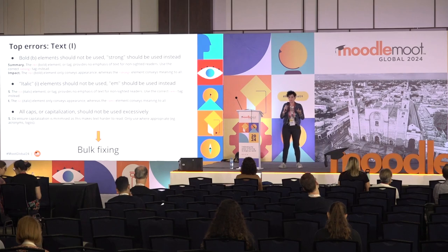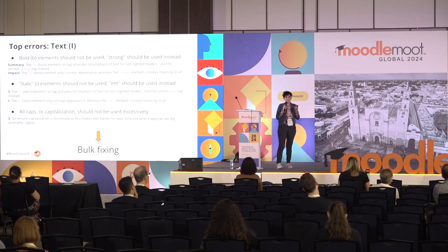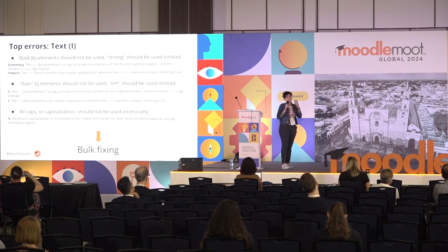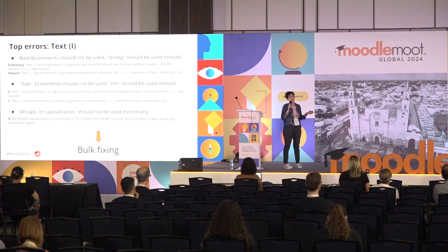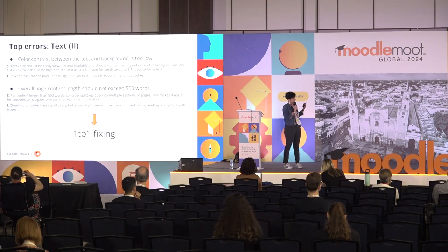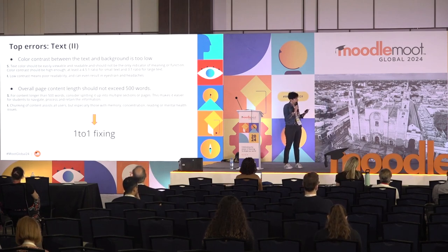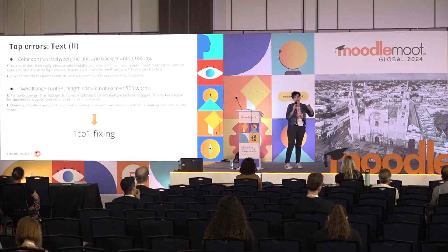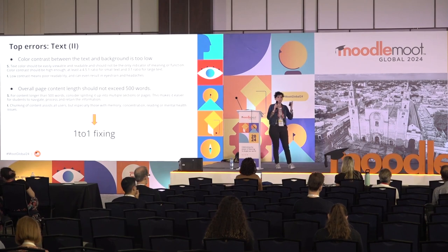The most common errors are due to improper use of HTML elements, such as B for bold instead of strong, which is semantic, and I for italics. But the most important thing we found is the overuse of capitalization — I will come back to this at the end of the presentation. We also found other kinds of errors, such as improper use of colors and the use of more than 500 words per page. The first is a problem for readability and the second is a problem for memory and concentration.